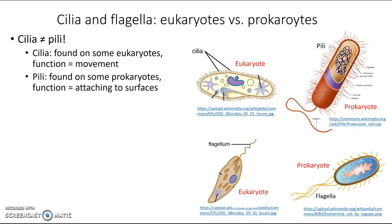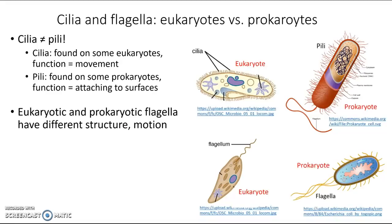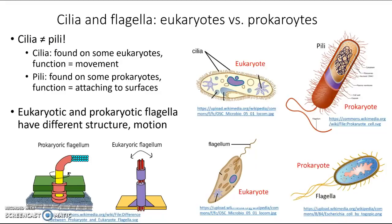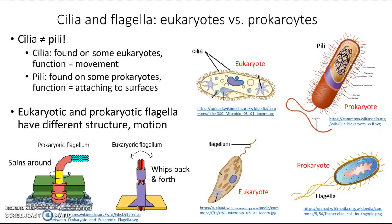As for flagella, both eukaryotic and prokaryotic cells can have them, and both use them for motion, but they're not quite the same. The prokaryotic flagellum works by spinning around on a rotor, whereas the eukaryotic flagellum whips back and forth. They're also made of different molecules: the prokaryotic flagellum is made of proteins called flagellin, while the eukaryotic one is made of long microtubule fibers. That's everything you need to know about cilia and flagella — until next time, take care of yourself and take care of each other.